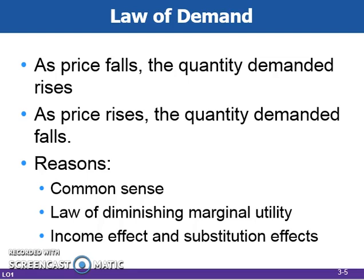The second reason is caused by diminishing marginal utility — the decrease in added satisfaction that results as one consumes additional units of a good or service. For example, the second Big Mac yields less extra satisfaction or utility than the first. Since additional units yield less utility, the price has to be lower to make up for it. This is sometimes why restaurants will run buy-one-get-one-half-off specials to convince you to buy that second sandwich.